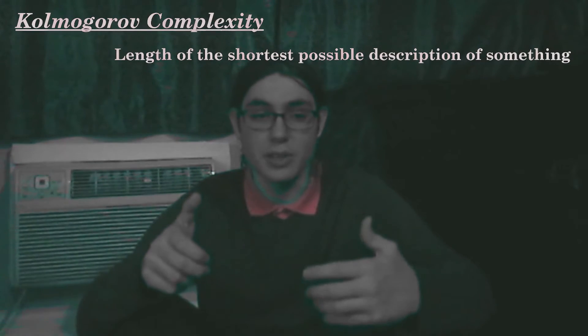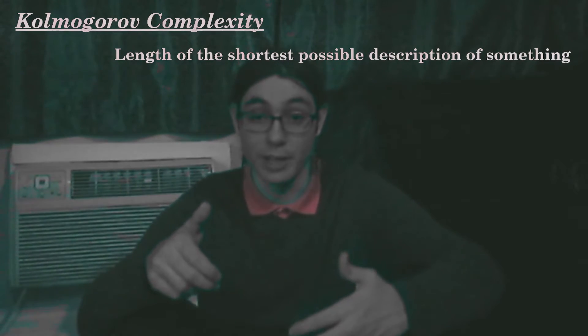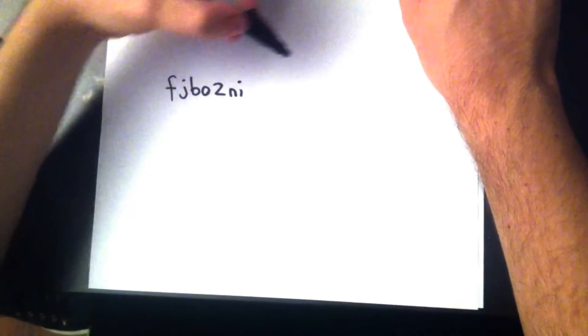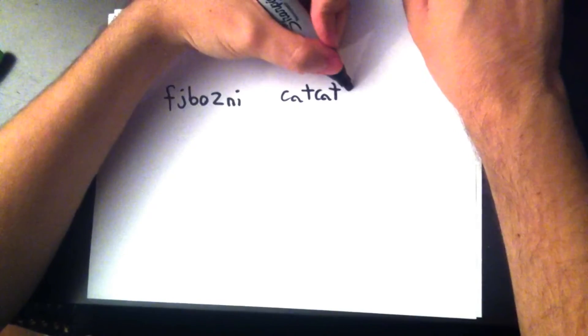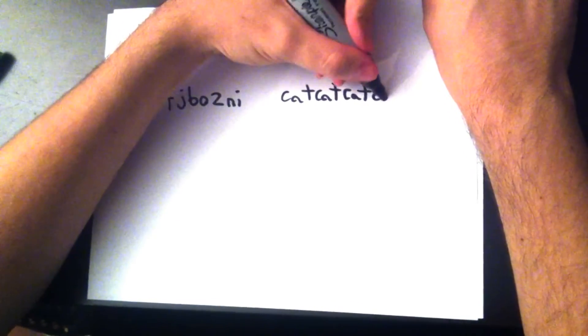We call the size or length of the smallest description its Kolmogorov complexity, or K. K defines a measure of intrinsic complexity, an essential property of any string, of how much information it really contains. A string like F-J-B-O-Z-N-I is shorter than cat-cat-cat-cat-cat, but it actually looks a little more complex.